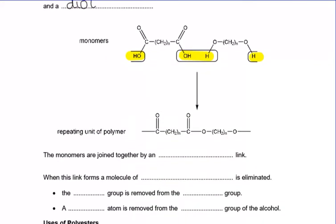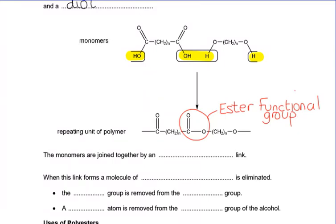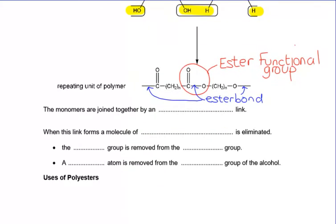When the water has condensed out, we've created this ester functional group where we've got C double bond O, O joined to carbons on either side. So that is our ester functional group - that's where the polyester name comes from. We can also mark on here that we have an ester bond - that's the bond between the C and the single bond O. There would be another ester bond joining to the next carboxylic acid, and another joining to the next alcohol group. These are all ester bonds linking our esters together, making a polyester. The monomers are joined by an ester link, an ester bond.